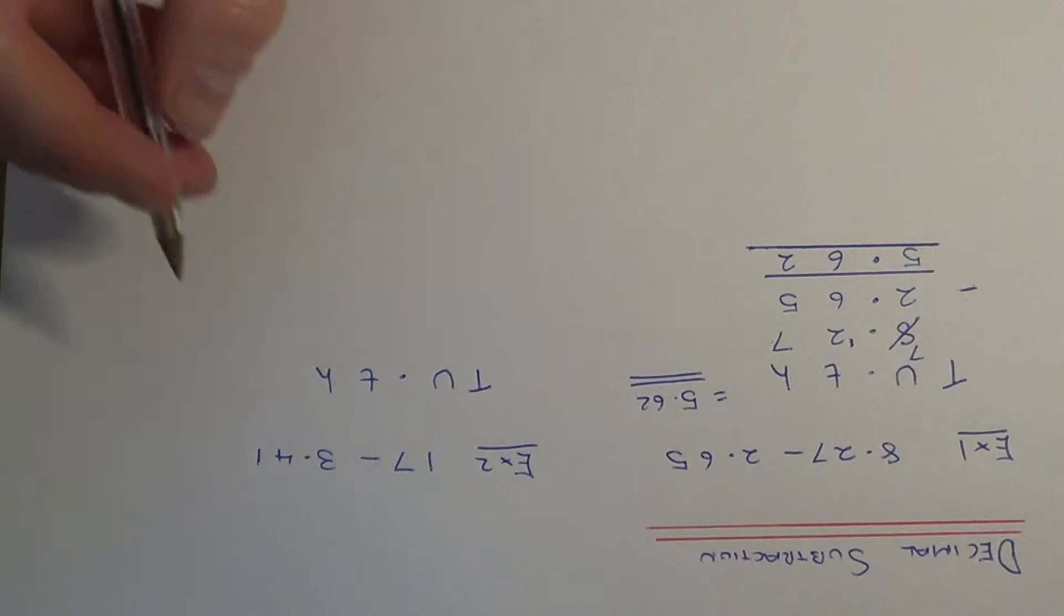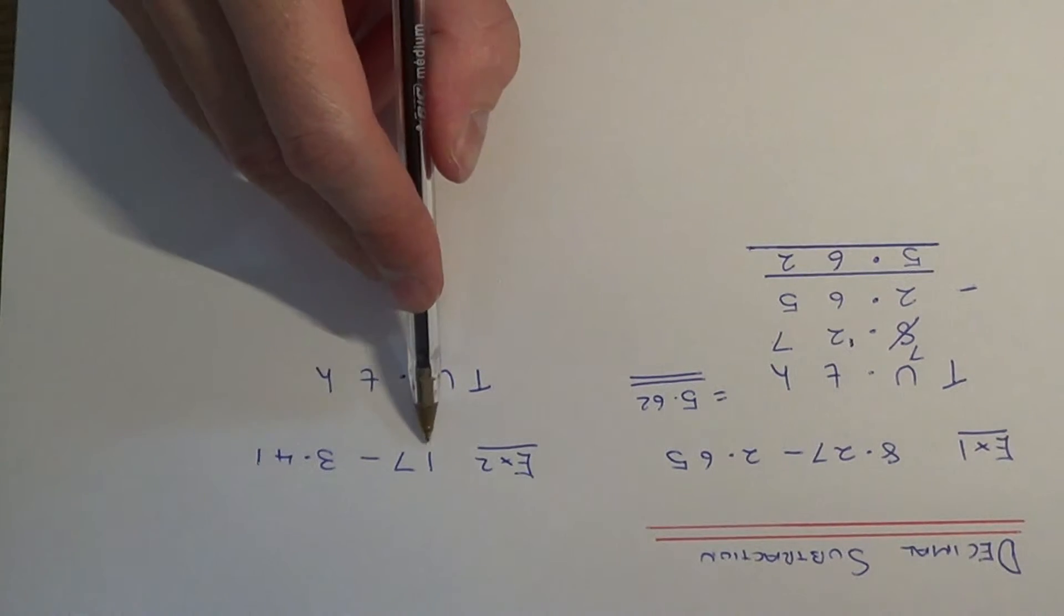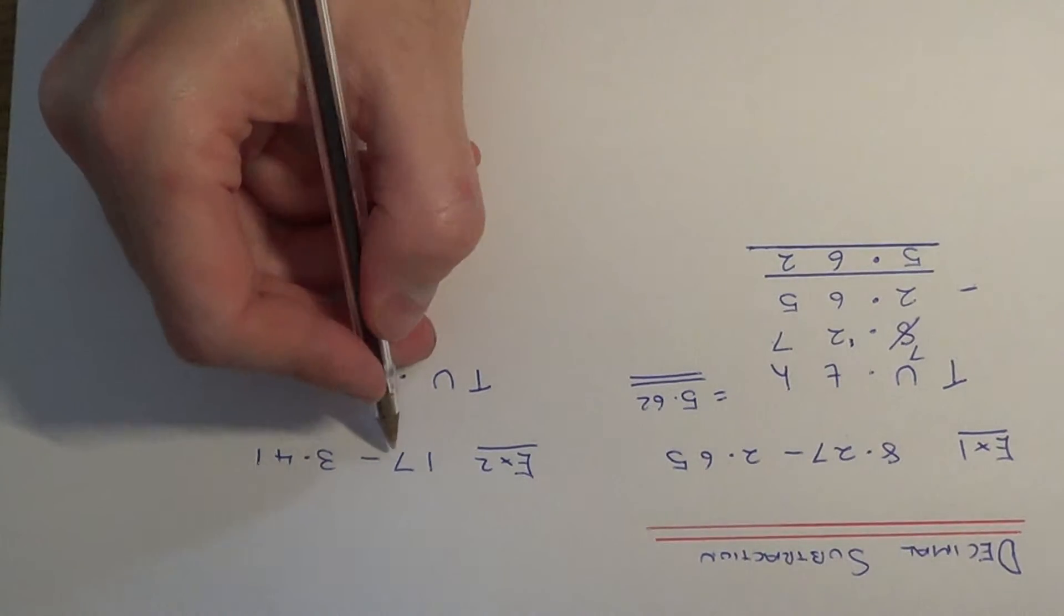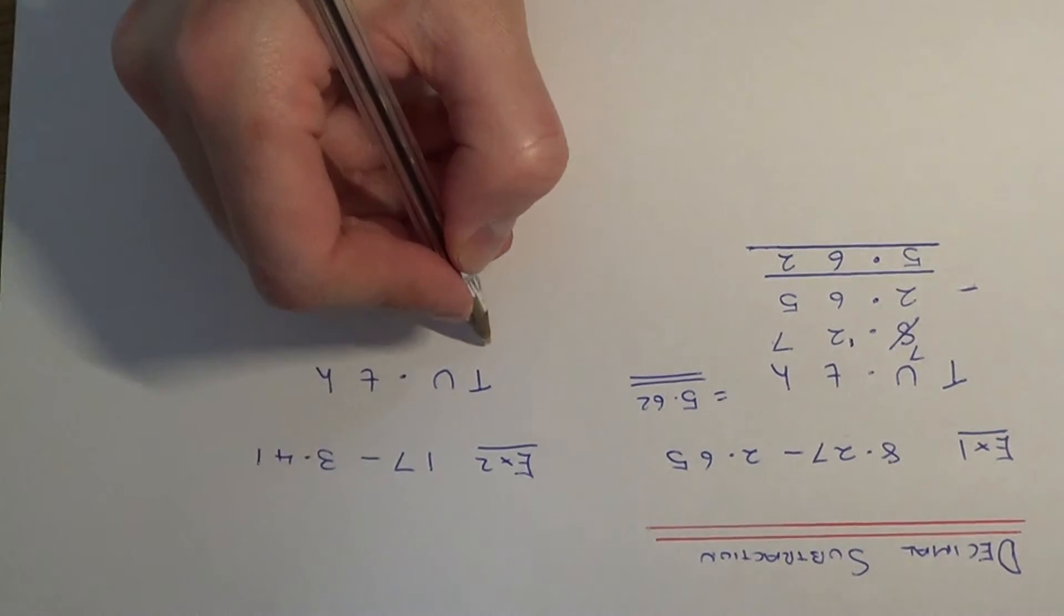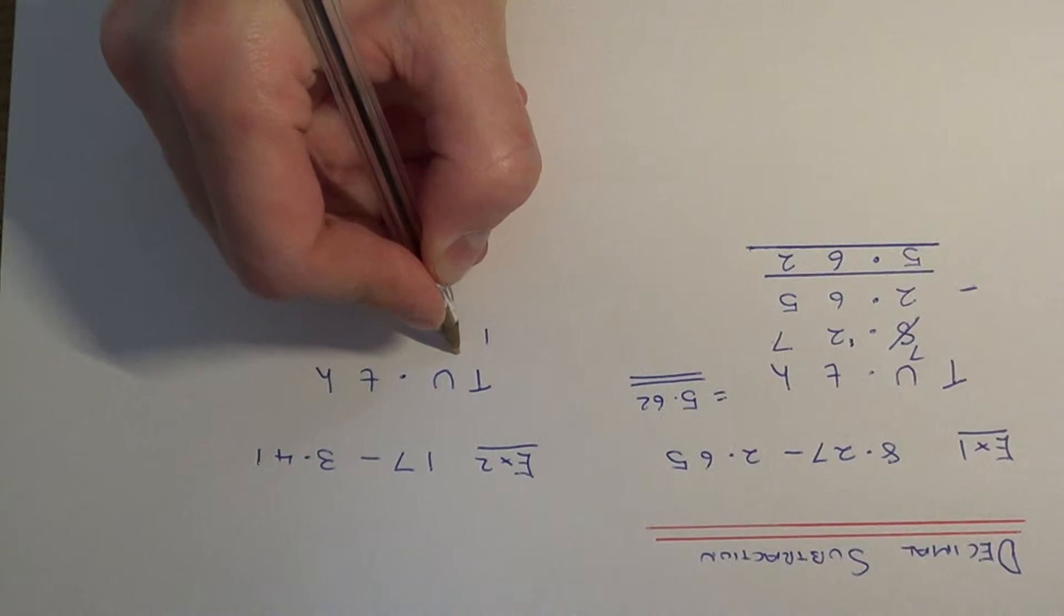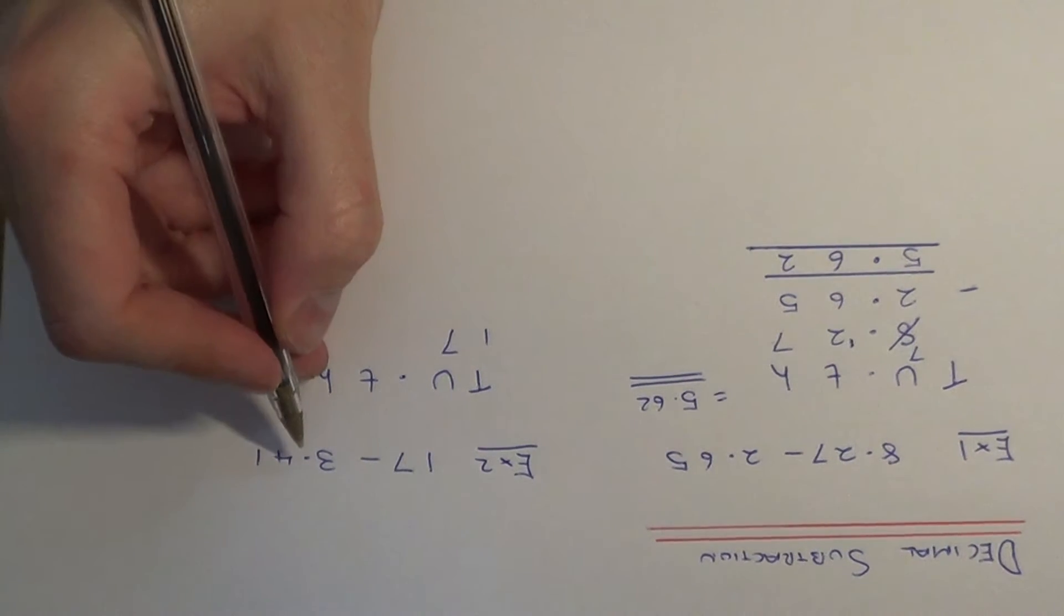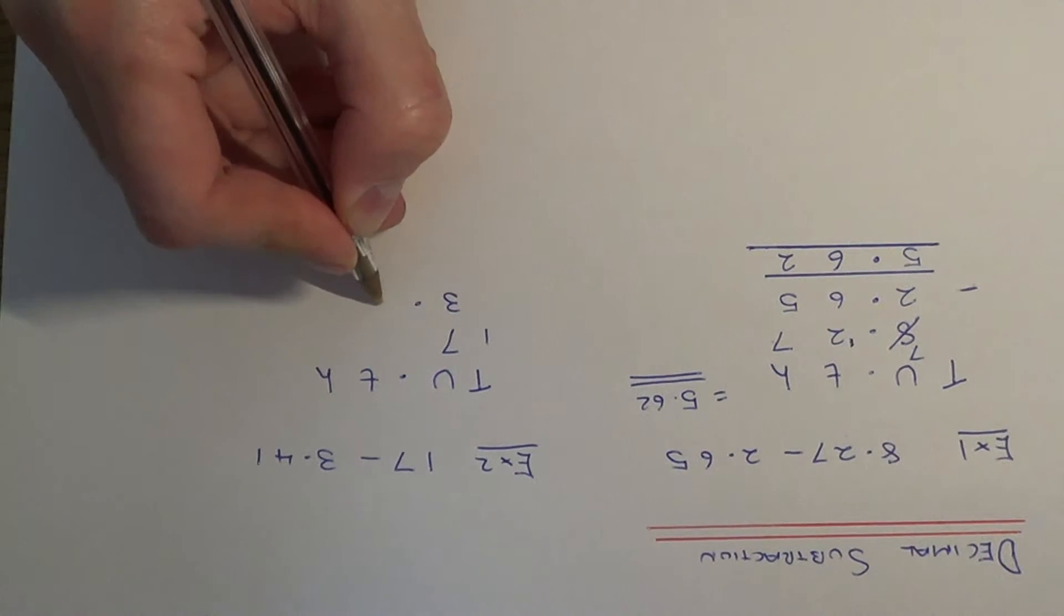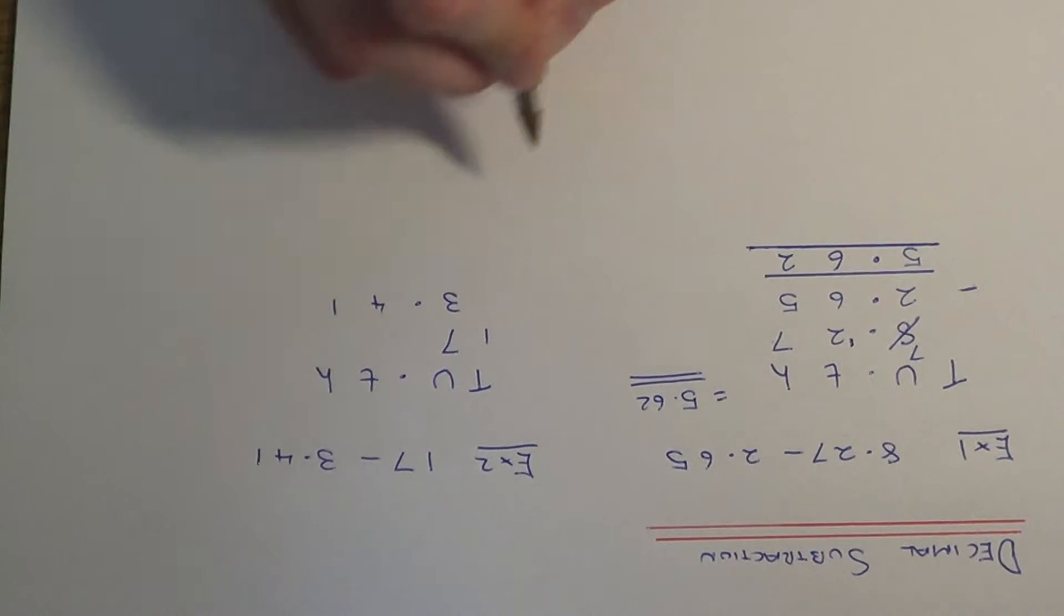So let's move on to example 2 then, so this time we have 17 take away 3.41. So with our first number then, this is a whole number, so we've got 1 ten and 7 units, and our second number we've got 3 units, 4 tenths and 1 hundredth.